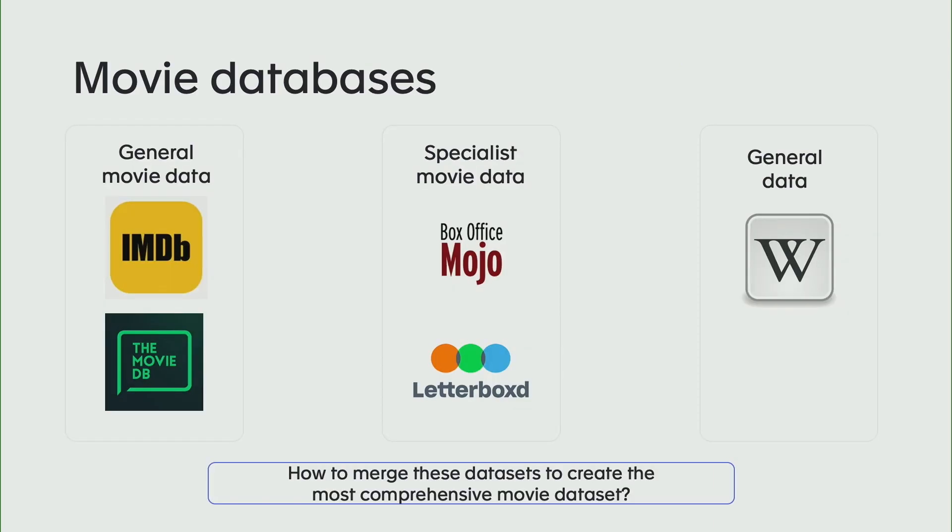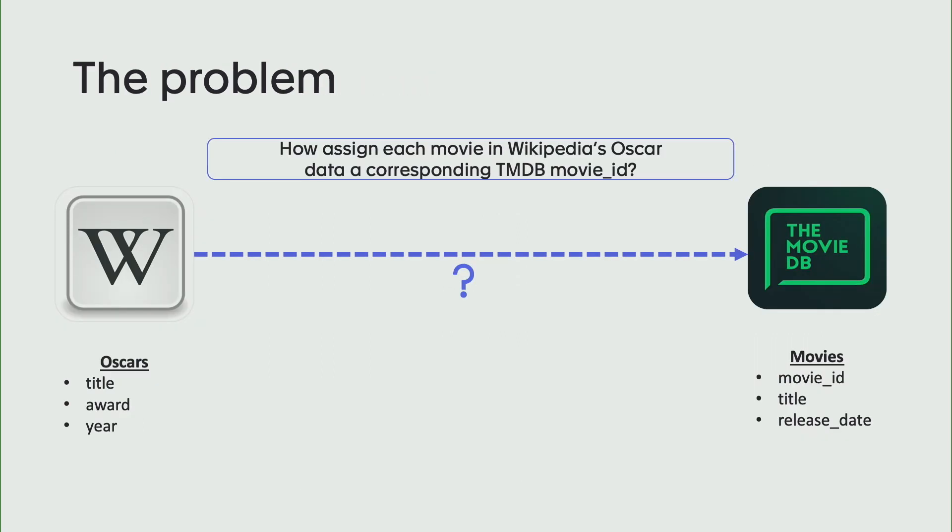That's basically what I'm going to be talking about — how we've tried to solve this problem — and hopefully ask you guys to help if you're interested. In this world of movies, the data available comes from many different places, and putting them all together can be quite a difficult challenge. The one I'm going to talk about in particular is how we took Oscars data from Wikipedia and merged it with data from the Movie Database.